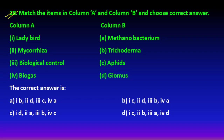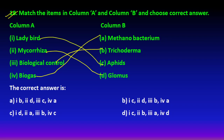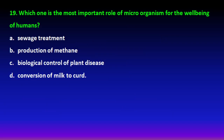Question number 18: match the following. Mycorrhiza — example is Glomus (a fungus). Biogas — produced by methane bacteria. Biological control — done by Trichoderma. Ladybird — is an insect (used in biological control of pests). So option B is the right answer for question number 18.